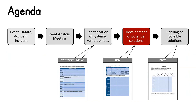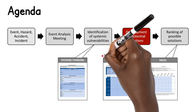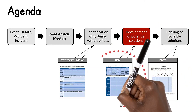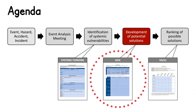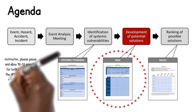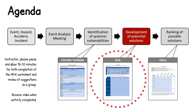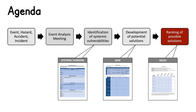Now that you understand how to develop potential interventions for given systemic failures, let's take a moment to complete the HFIX worksheet. Now that you have a large list of potential interventions, you may be wondering how do you end up selecting the one that will be most likely to succeed. Don't worry — we have another human factors tool we can use called FACES to help us rank our interventions.